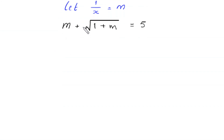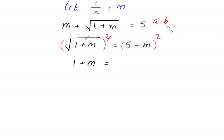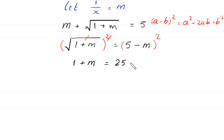Now we move m to the right side, leaving the square root of 1 plus m equals 5 minus m. We then square both sides; the square root cancels on the left, giving 1 plus m equals (5 minus m) squared. Using the identity (a minus b) squared equals a squared minus 2ab plus b squared, we get 1 plus m equals 25 minus 10m plus m squared.